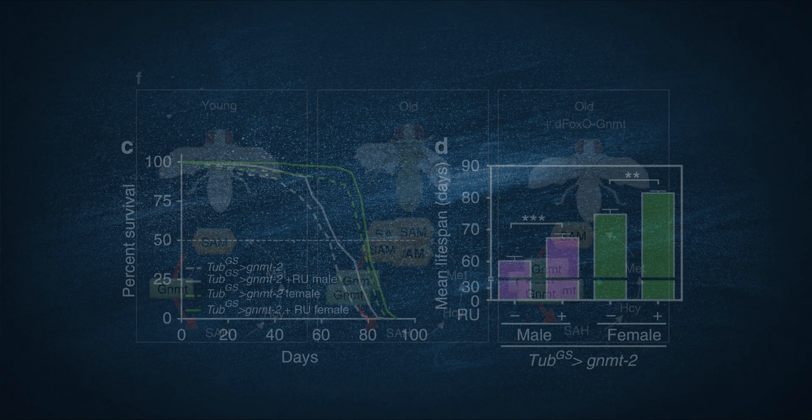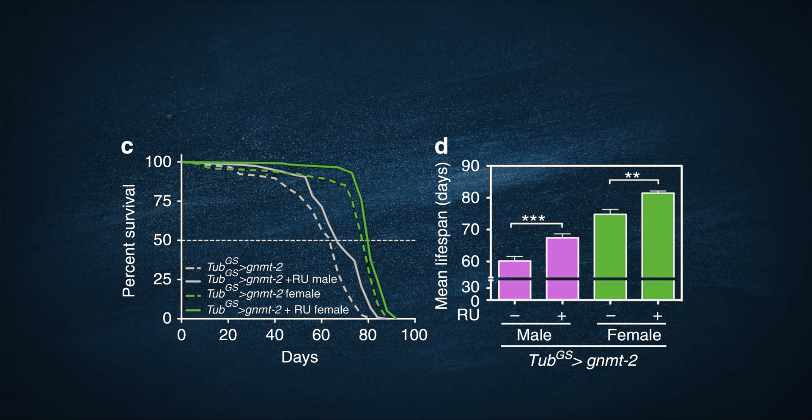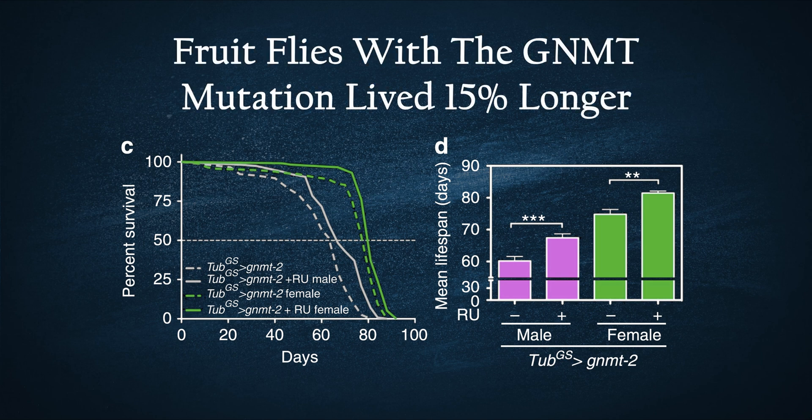In fact, the fruit flies that had this mutation lived 15% longer, very similar to the mice from the experiment that we started this video off with.